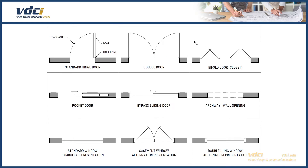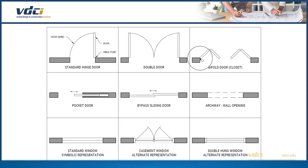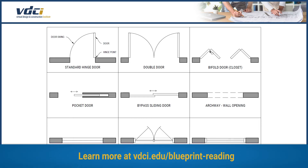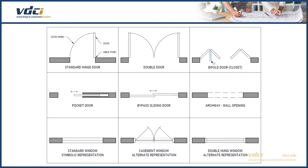Right here we have bi-fold or closet doors. You can see the door is hinged here and it's hinged on the bottom side here as well. So when they buckle down, this area here slides down and will align with the lower part of the door right there.